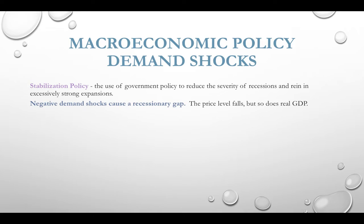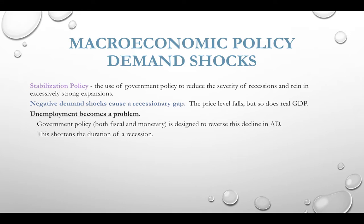Negative demand shocks will cause a recessionary gap — these are decreases in demand. Price level falls, which is not necessarily bad in the short run, but GDP also falls, which causes problems. Unemployment becomes the primary problem of a recessionary gap. Government policy — both fiscal and monetary policy — is designed to reverse this fall in aggregate demand. We'll talk mostly about fiscal policy this chapter and monetary policy in Unit 4.